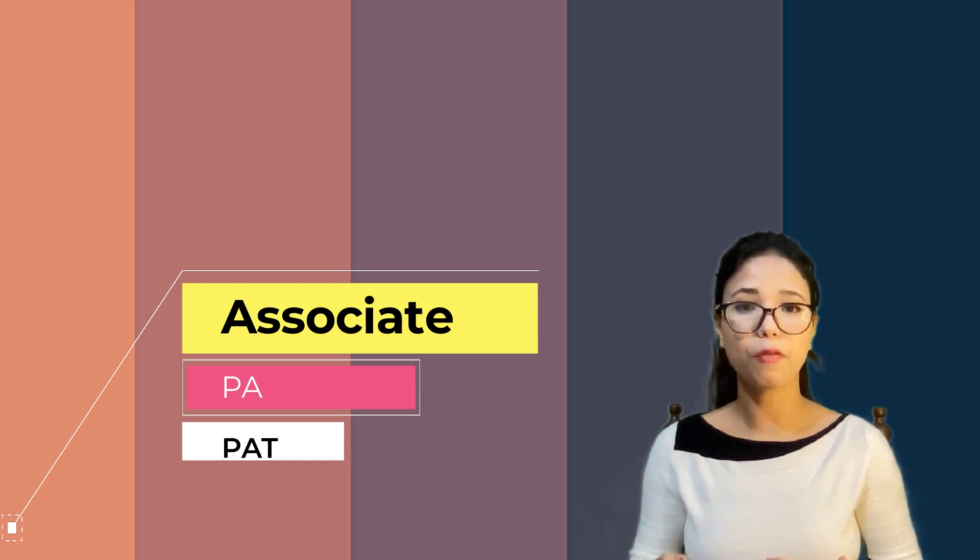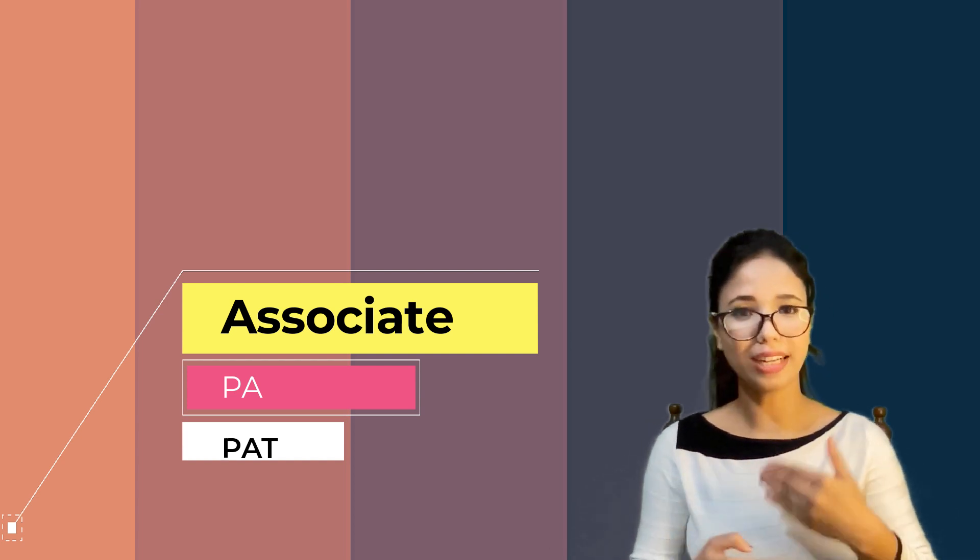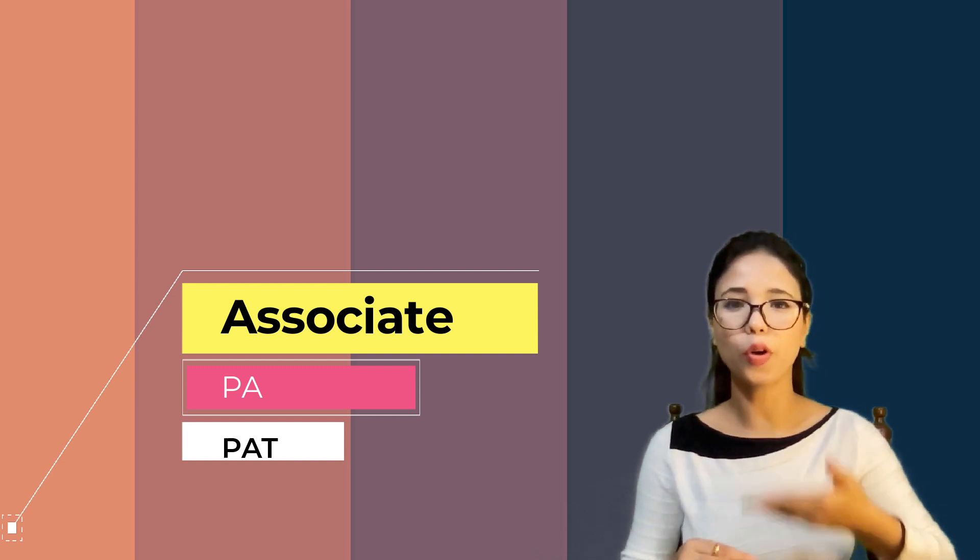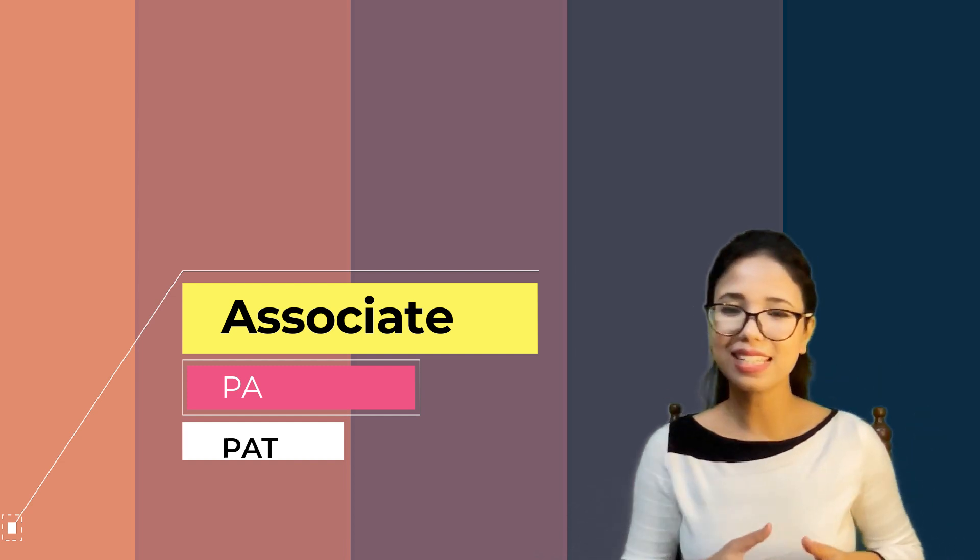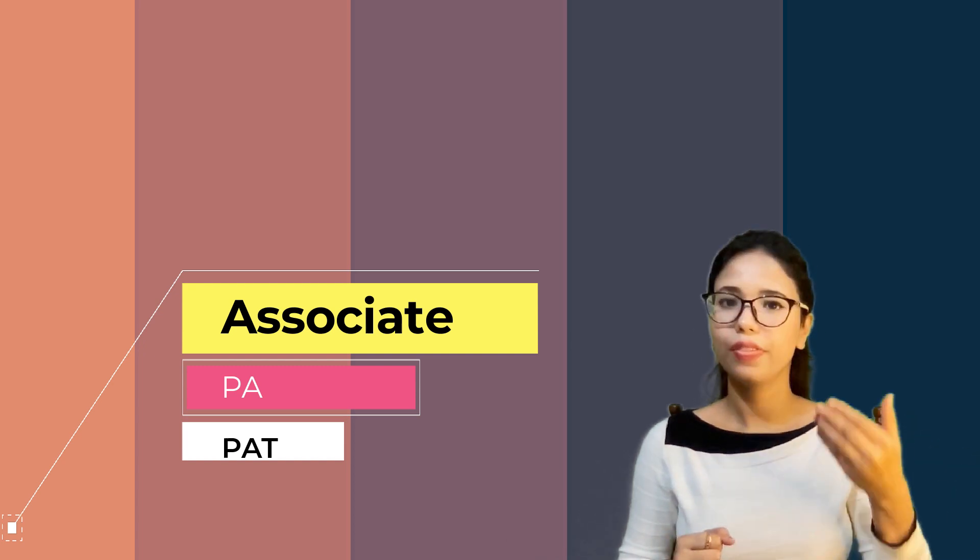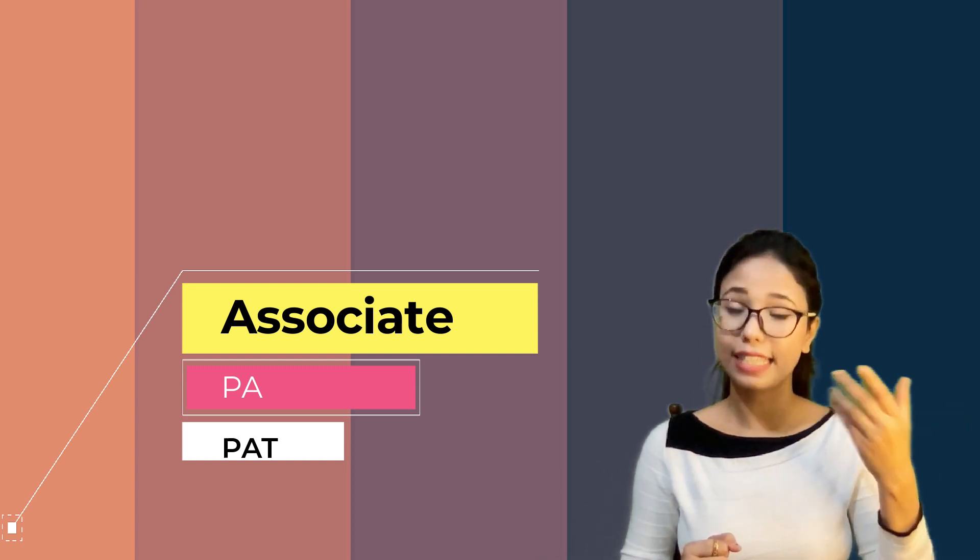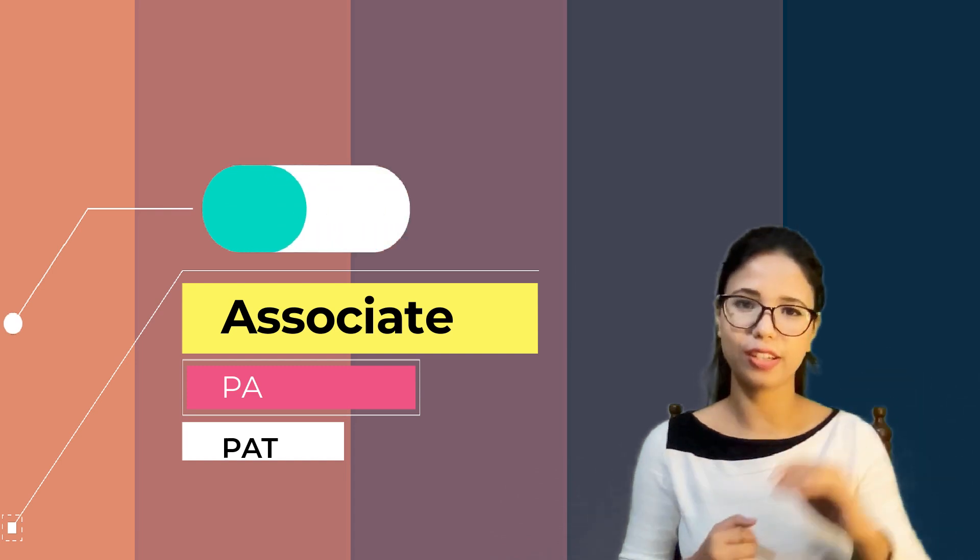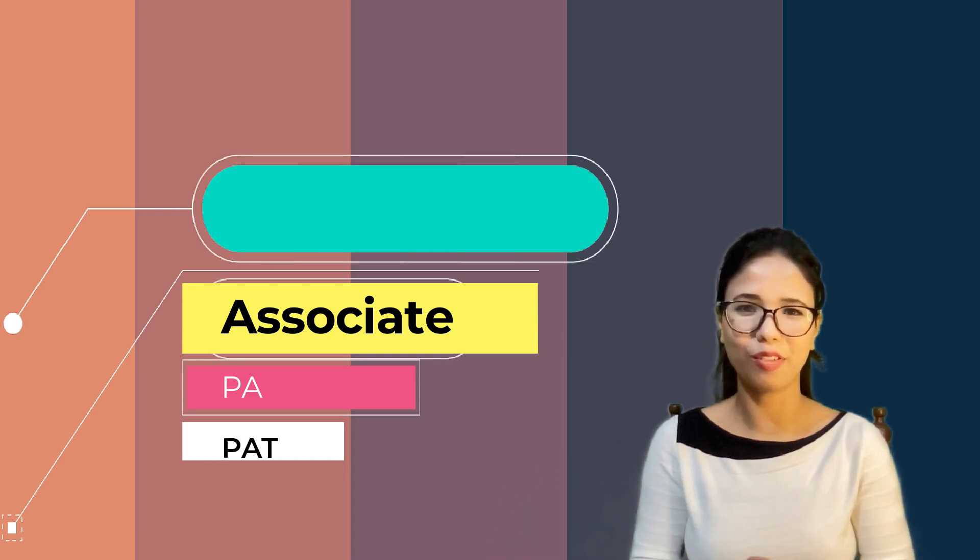And suppose if you're performing well, your role or designation will keep going up. Now, what is this hierarchy? Starting with PAT, then PA, then Associate, then Senior Associate, and then Manager level. Up to the Manager level, we all know.